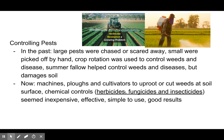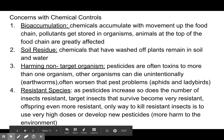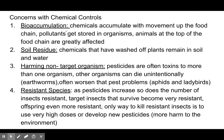There are also chemical controls like herbicides, fungicides, and insecticides — they seem inexpensive, effective, and simple to use. However, a concern with chemical controls is bioaccumulation, which we talked about in the previous unit: chemicals accumulate with movement up the food chain, pollutants get stored in organisms, and animals at the top of the food chain are generally affected the most.